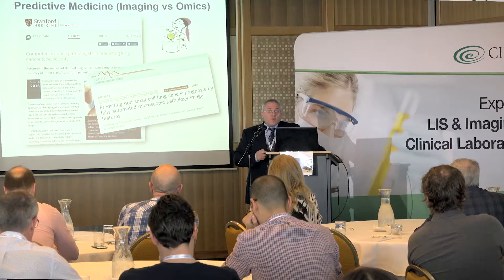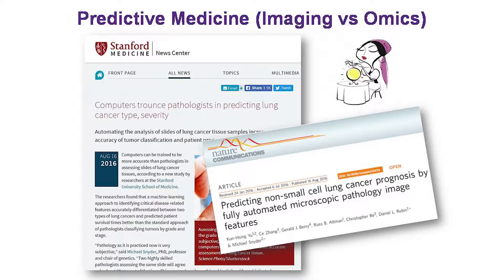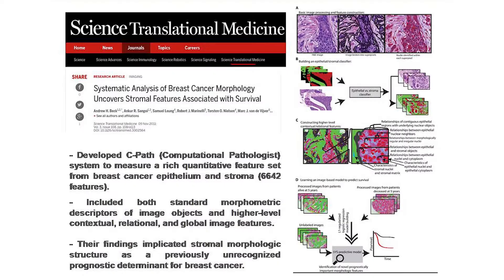Stanford published a paper showing that a computer can look at lung cancer, accurately diagnose the subtype, and predict severity and prognosis better than pathologists. If you read the paper, there are flaws, but it's this kind of hype that people read — chairmen, CEOs, the folks who write the checks — and that drives willingness to invest in digital pathology tools to use these kinds of analyses.